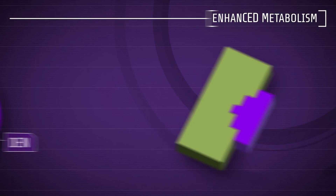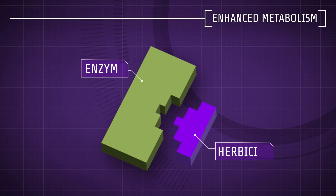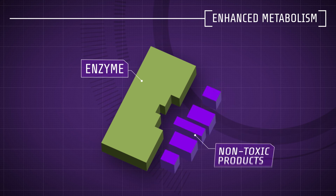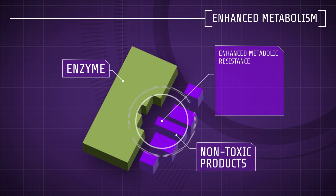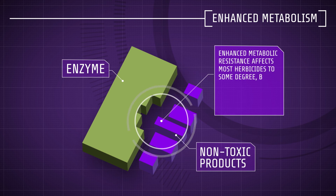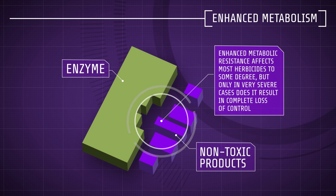Enhanced metabolism. Enhanced metabolic resistance results in degradation of the herbicide into non-toxic products for the weed. This is the most common resistance in grass weeds in the UK, and affects most herbicides to some degree, but only in very severe cases does it result in complete loss of control.